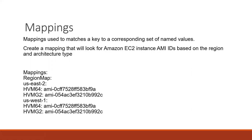Then we have mapping. Mapping is used to match a key to a corresponding set of named values. For example, when creating an EC2 instance, we can map AMI IDs based on the region and architecture. When you launch an instance, it shows which AMI is available per region. We can define in our CloudFormation template that if it is US East 2, these are the two images available; if it is US West 1, these are the two AMIs available.